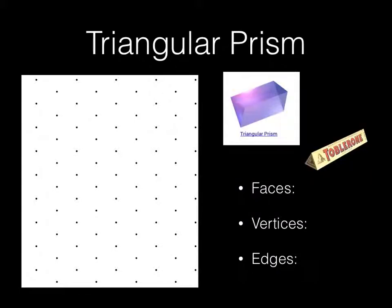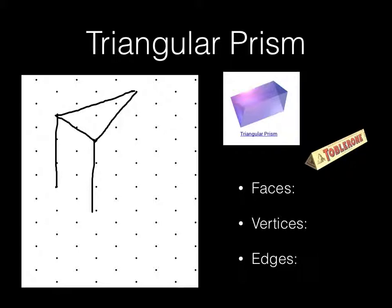Now, triangular prism. Instead of the base being a rectangle, the base is a triangle. They basically look like blocks of cheese. You make your top a triangle — draw any triangle — then drop the sides straight down, making sure they're the same length. I counted four dots down on each side. Complete it and you have your triangular prism.